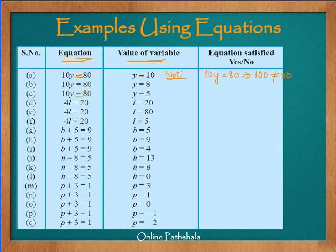Now, we have 10y equals 80 and y equals 8. What happens when I put y equals 8? So 10 times 8 is 80 — yes, the equation is satisfied with y equals 8. Now if y equals 5, then 10 times 5 is 50. On the left hand side we get 50, but 50 is not equal to 80. So this equation is not satisfied for y equals 5.